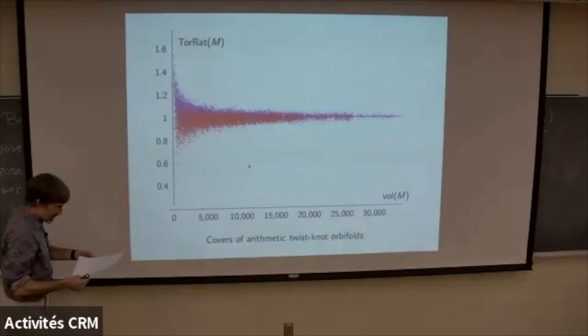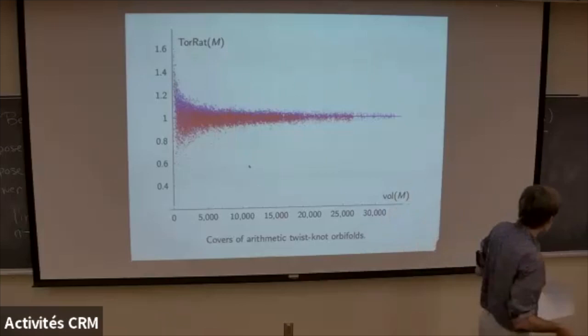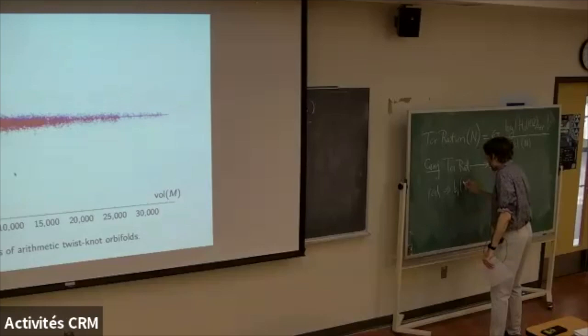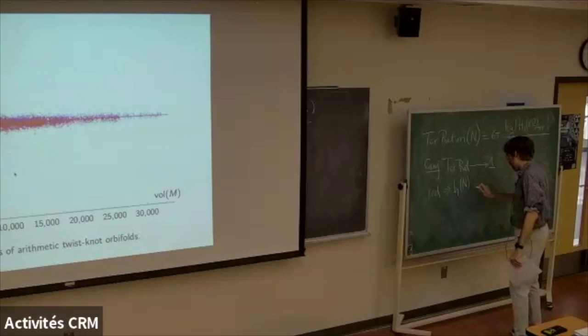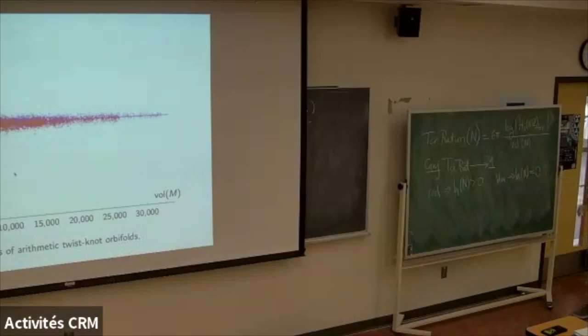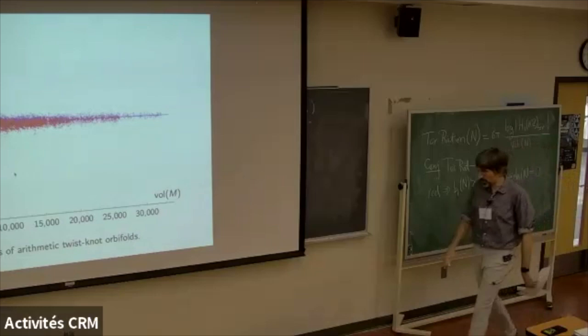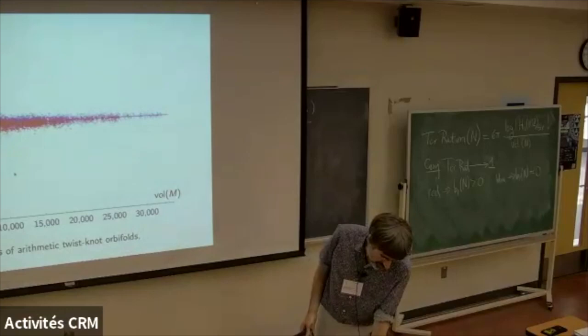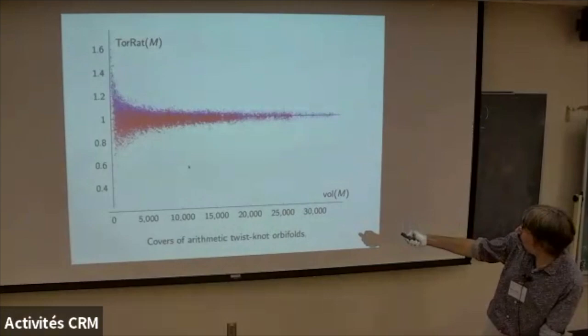The colors correspond to the free part of the homology: red means the first Betti number of the manifold is positive — there's some free part to your first homology — and blue means it's zero — no free part, these are rational homology spheres. Roughly 35% are red dots and the rest are blue. You can see that the red dots seem to be shifted down a little compared to the blue dots.